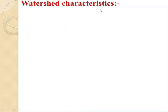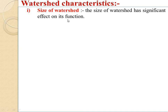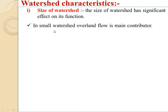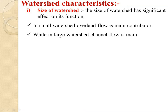Coming to watershed characteristics. The first one is the size of watershed. The size of watershed has a significant effect on its function. In small watersheds, overland flow is the main contributor, while in large watersheds, channel flow is main.